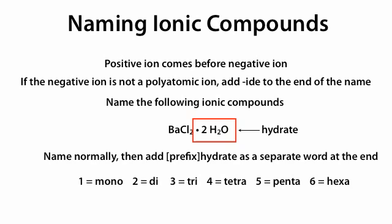If we have two hydrates, the prefix is di. If we have three, the prefix is tri. Four hydrates is tetra. Five hydrates is penta. And six hydrates is hexa. So in this case, we call this barium chloride dihydrate — we use the prefix di and hydrate for the two H2O.